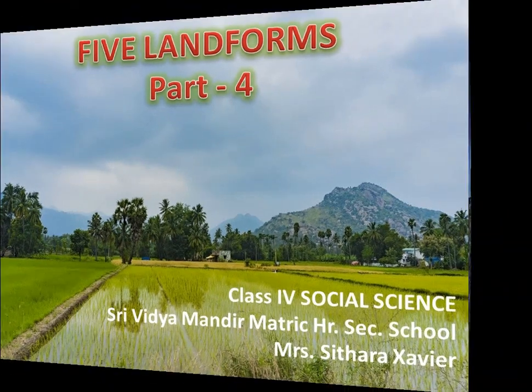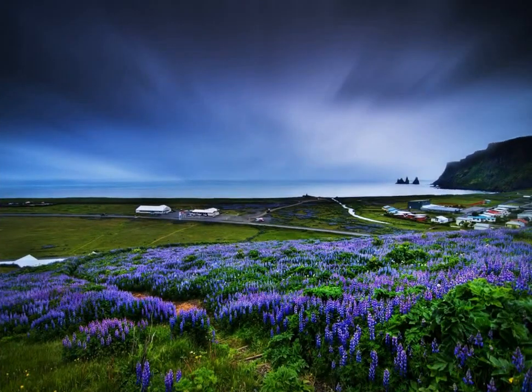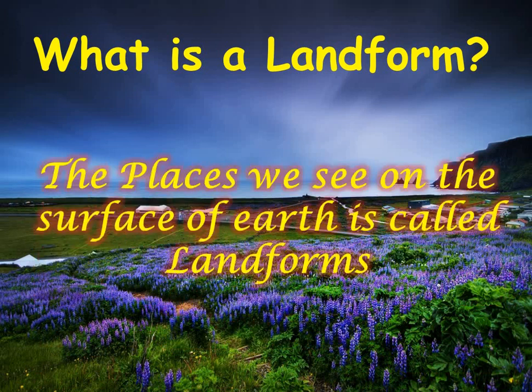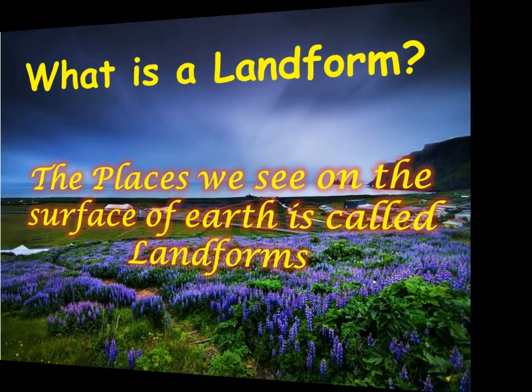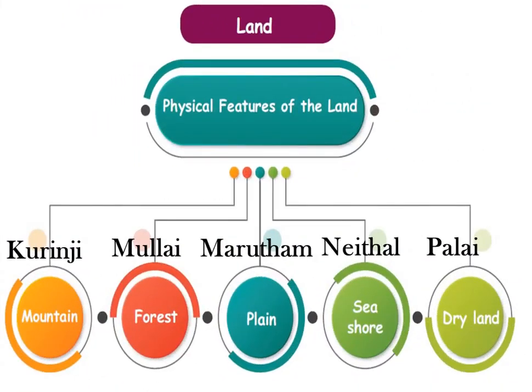What is a landform? The places that we see on the surface of the earth are called landforms. Land is one of the five elements of nature. The different elements are land, water, air, fire, and sky.